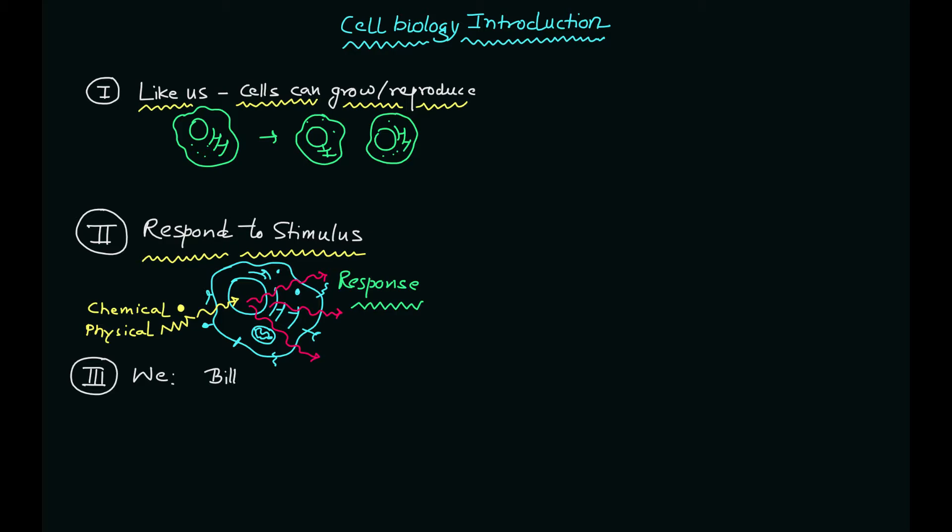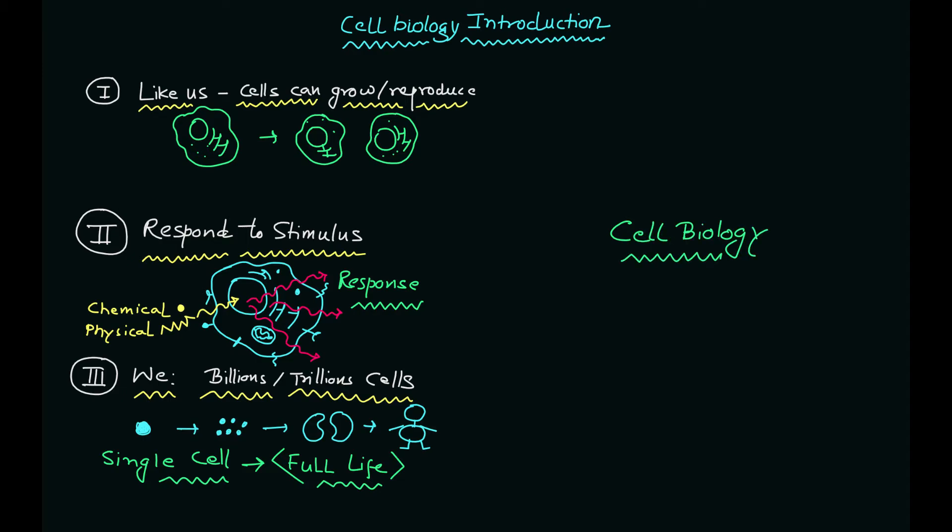As organisms, we're composed of billions and trillions of cells. Here I'm showing you that a single cell can construct tissue, then construct a specific organ, and lead to the full organism - in this case, humans. A single cell has the capability to construct or live a full life. These are the basic features of the cell.